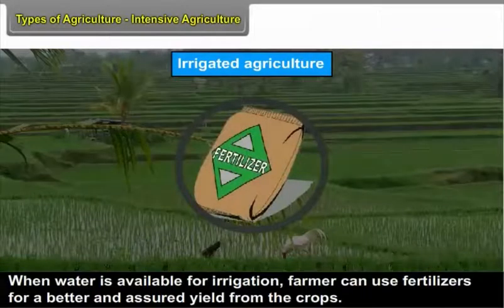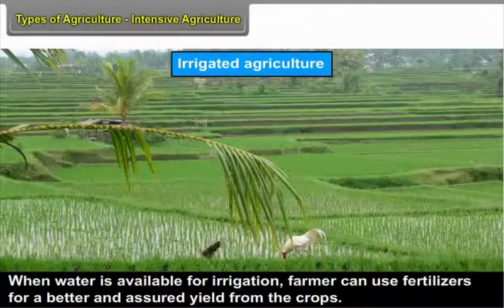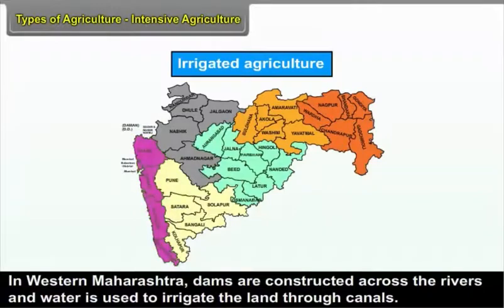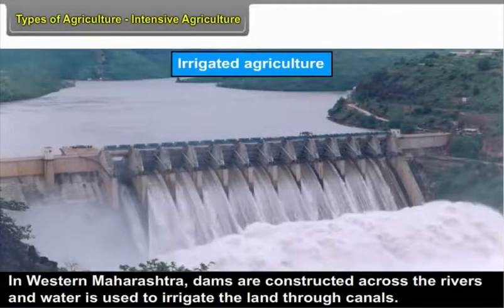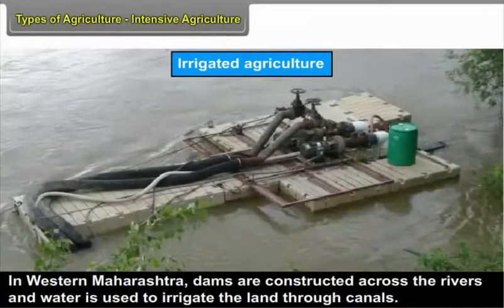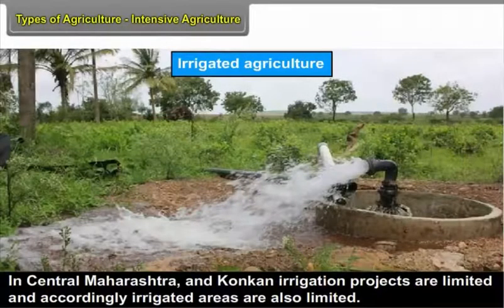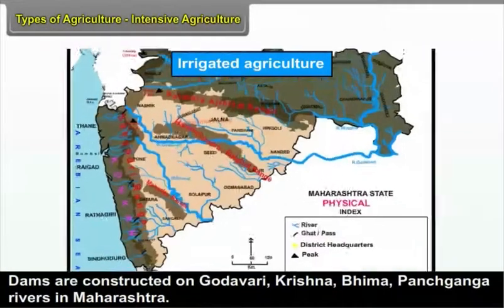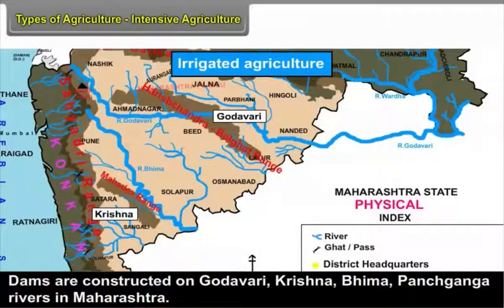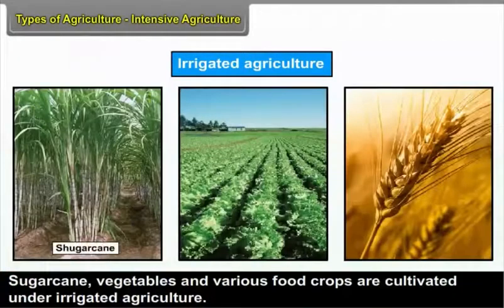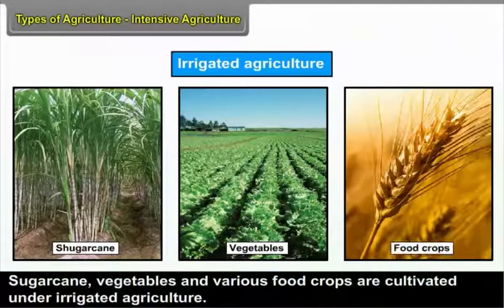When water is available for irrigation, farmers can use fertilizers for a better and assured yield. In Western Maharashtra, dams are constructed across rivers and water is used to irrigate land through canals. In central Maharashtra and Konkan, irrigation projects are limited and accordingly irrigated areas are also limited. Dams are constructed on the Godavari, Krishna, Bhima, and Panchaganga rivers. Sugarcane, vegetables, and various food crops are cultivated under irrigated agriculture.